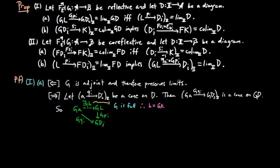But G is full, so H is equal to GK for some morphism K, and G is faithful, so K is unique. And also, since G is faithful, we have G PI K is equal to GQI implies PI K is equal to QI for each I.